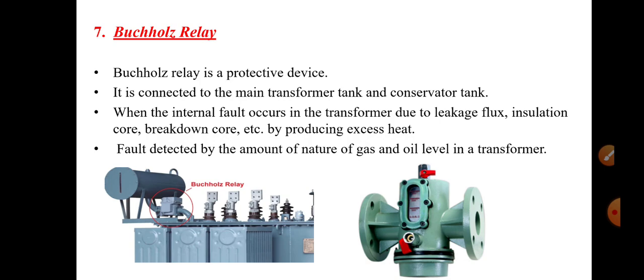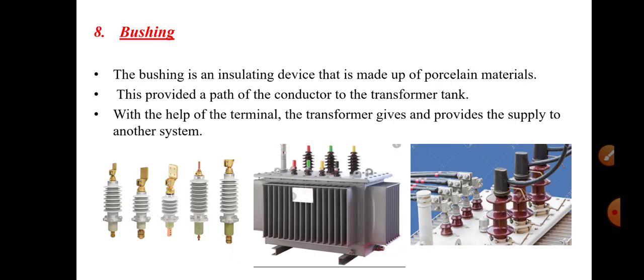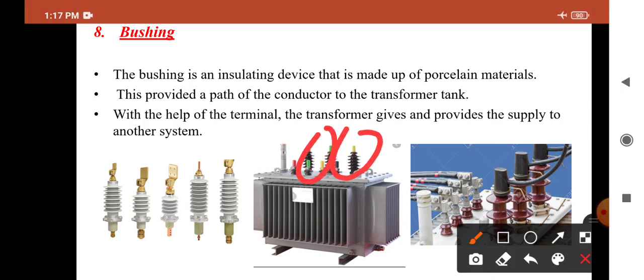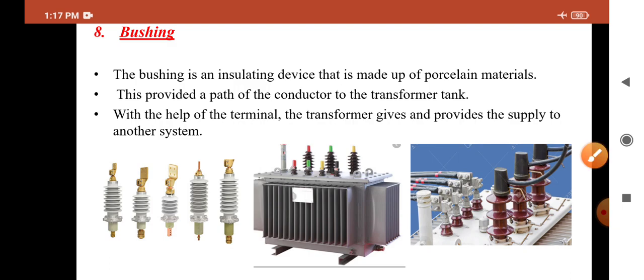The next part is the bushing. From the figure, we can see these are the vertical lines — that is the bushing. Bushing is an insulating device made up of porcelain material. It provides a path for the conductor to the transformer. If we want to give supply to another system, the bushing is used for that purpose.